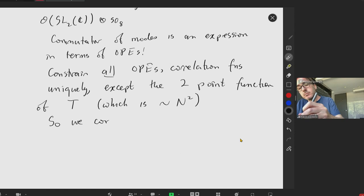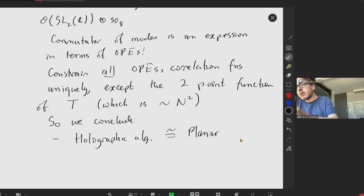So in other words, once we know this result, that we have this huge symmetry algebra, and once we can identify the quantum numbers of the states, everything else is determined by a single constant N. We conclude the holographic algebra is isomorphic to the planar CFT algebra.